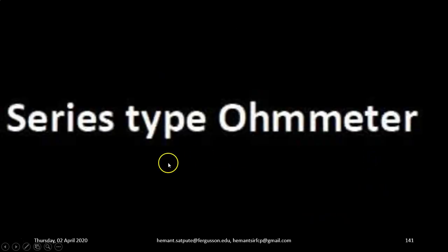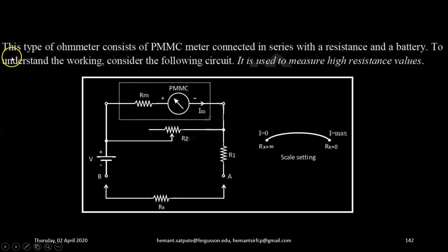Let's begin: series-type ohmmeter. This type of ohmmeter consists of PMMC meter connected in series with a resistance and a battery. To understand the working, consider the following circuit. It is used to measure high resistance values.